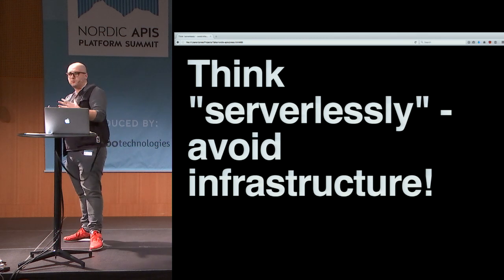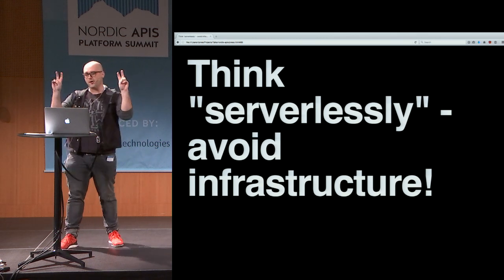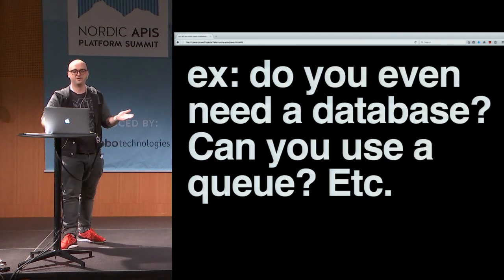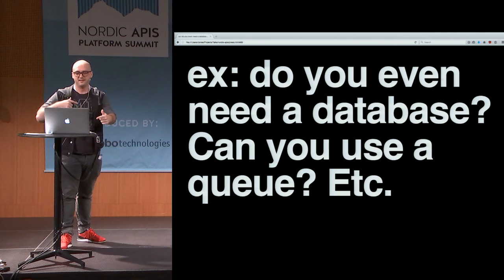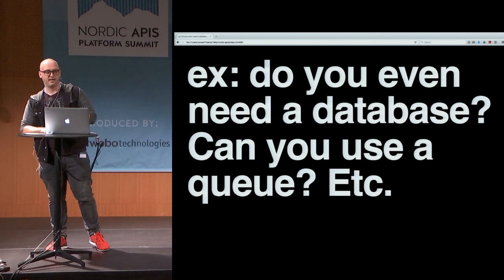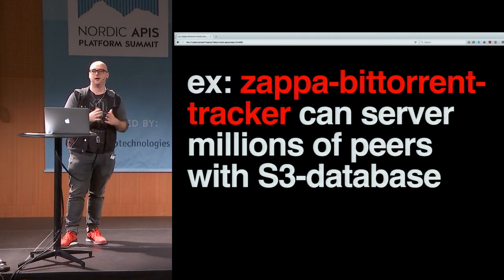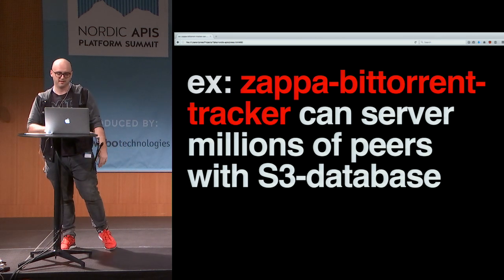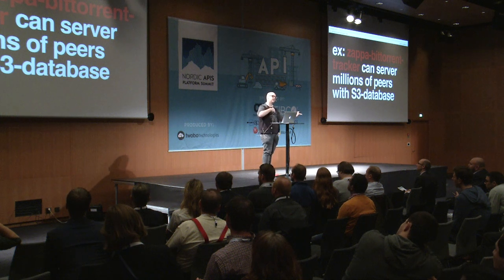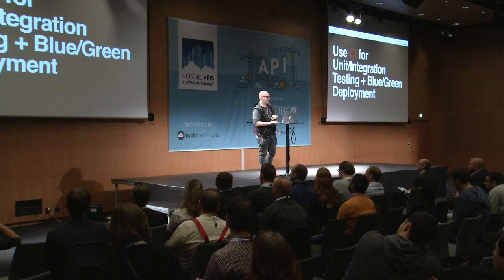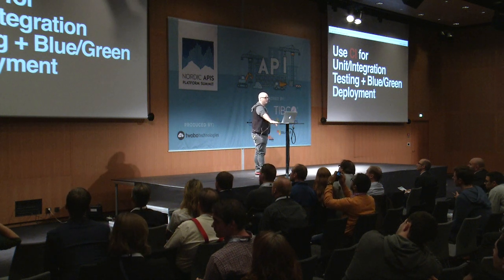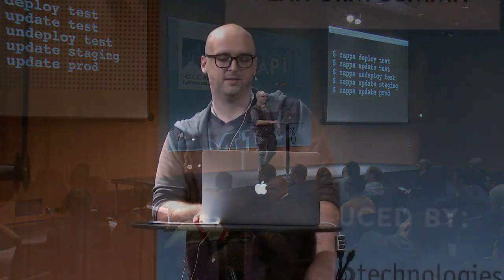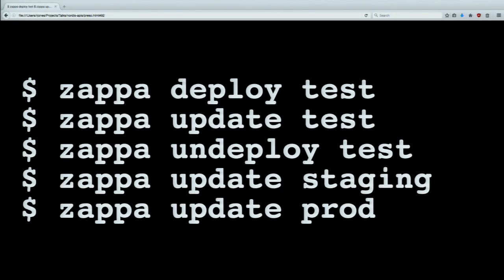It takes a while to think serverlessly — it's a paradigm shift. You want to avoid infrastructure. Do you actually need a database? Can you replace your database with a queue or with static hosting? For example, I wrote a BitTorrent tracker that has no database but can handle 50 million peers out of the box just using S3 as a JSON data store. That won't work for all applications, but depending on the type of traffic you're receiving, it might. Zappa also integrates nicely with CI for blue-green deployment, so you can have different environments for testing, staging, and prod.